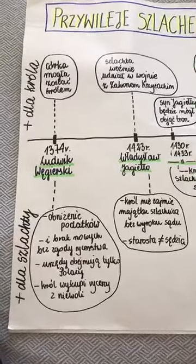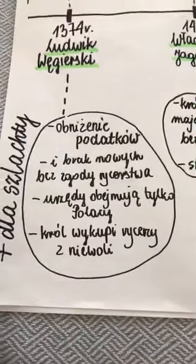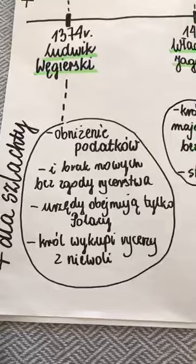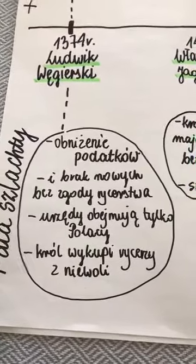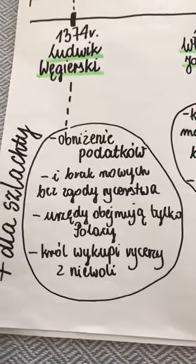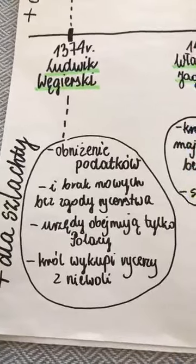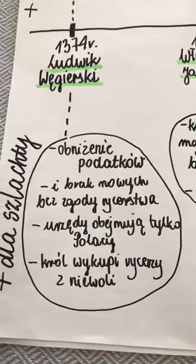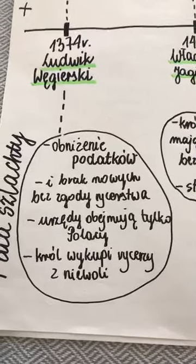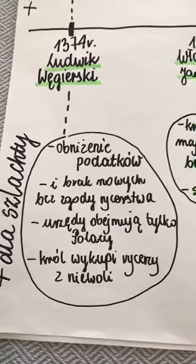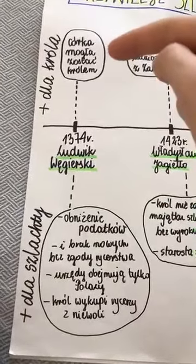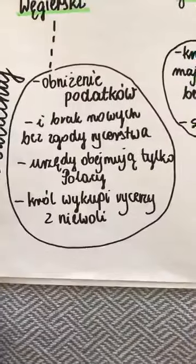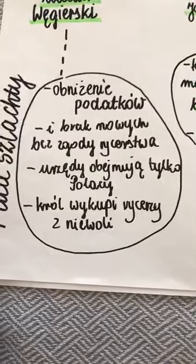Ludwik Węgierski chciał, żeby jego córki mogły zasiąść na tronie polskim. Formalnie nie mogły, ale kombinował i postanowił przekupić możnych, żeby zgodzili się, by jego córka Jadwiga mogła zasiadać na tronie polskim. Co im dał? Obniżył podatki, powiedział że nowe podatki mogą być nakładane tylko za zgodą rycerstwa, urzędy obejmują tylko Polacy, a król wykupi rycerzy, którzy dostaną się do niewoli podczas wojny. W zamian za to, żeby monarcha mógł być na danym tronie, król nadaje takie przywileje.